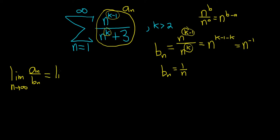Okay, let's go ahead and take the limit. So n is approaching infinity. And we have a sub n. So n to the k minus one over n to the k plus three, and then we're dividing this by b sub n. So when we divide by b sub n, we really multiply by the reciprocal. So this is times n over one.